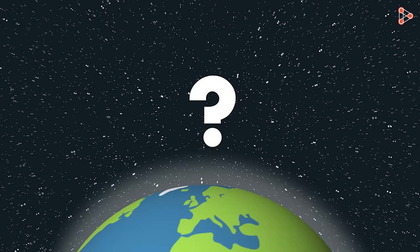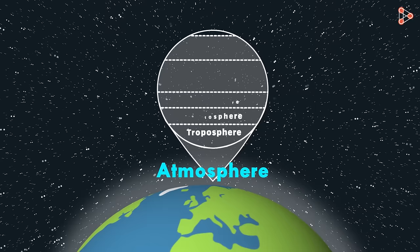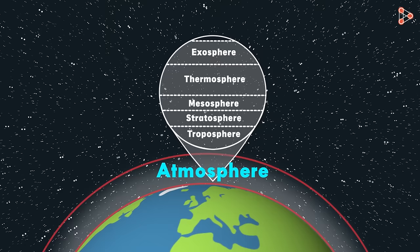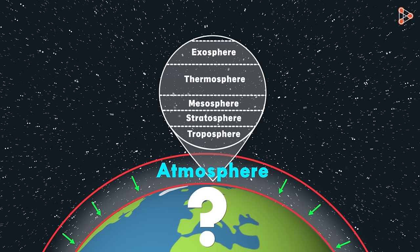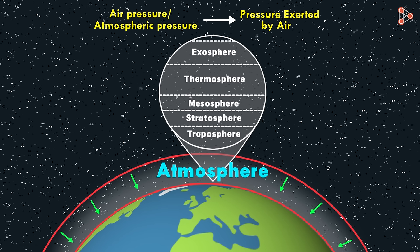We all know that the earth is surrounded by an envelope of air. Do you know what it's called? It's called atmosphere, and this atmosphere is divided into different layers as shown in this image. What can we say about the air in the atmosphere? The air in the atmosphere exerts pressure on the earth or we can say on the earth's objects. What is this pressure called? The pressure exerted by air is called air pressure or atmospheric pressure.